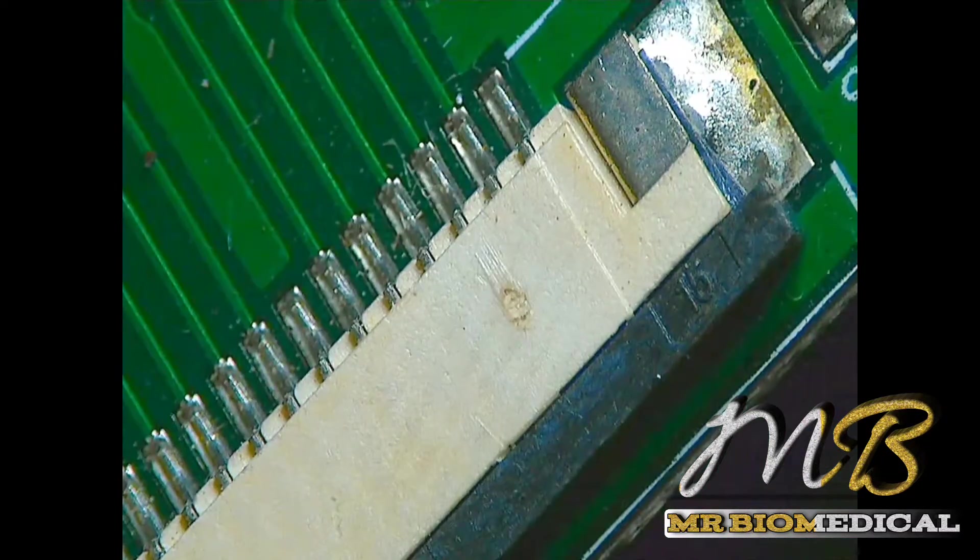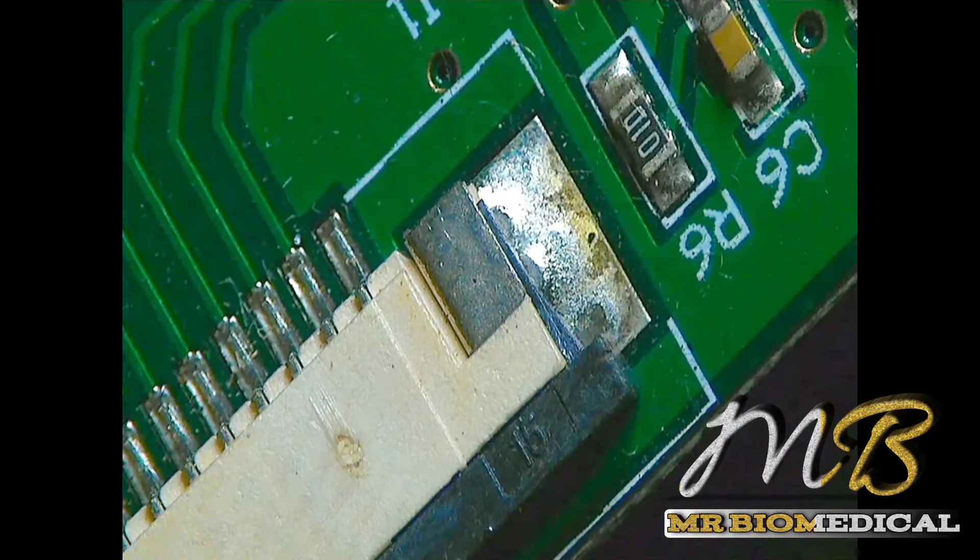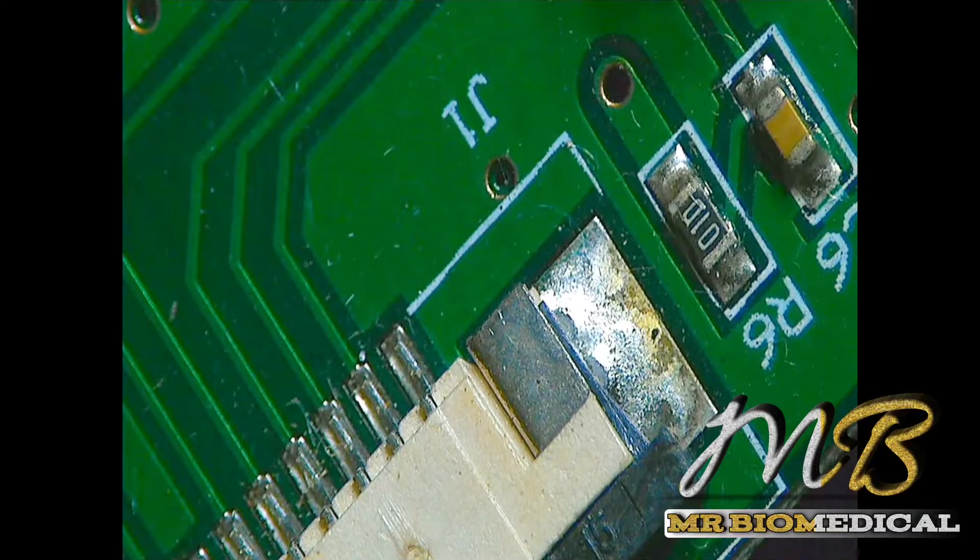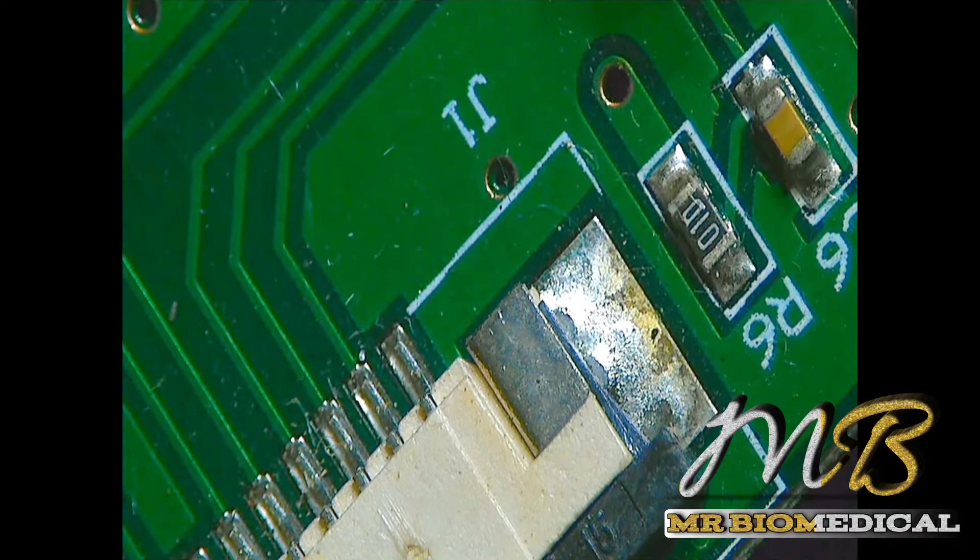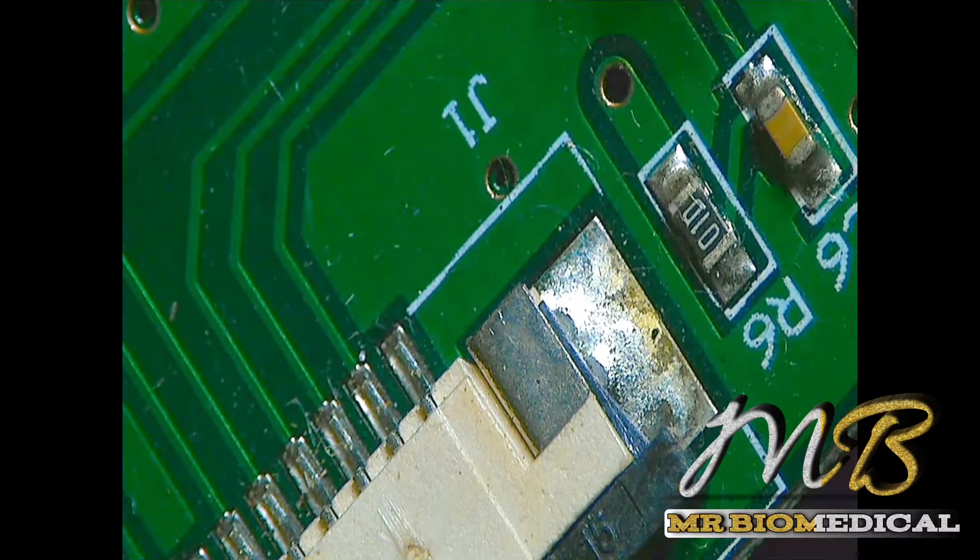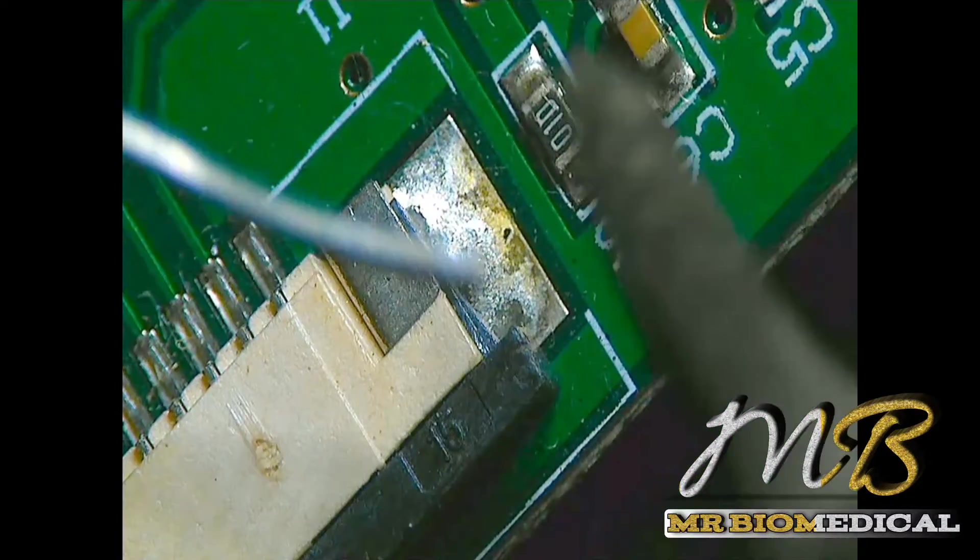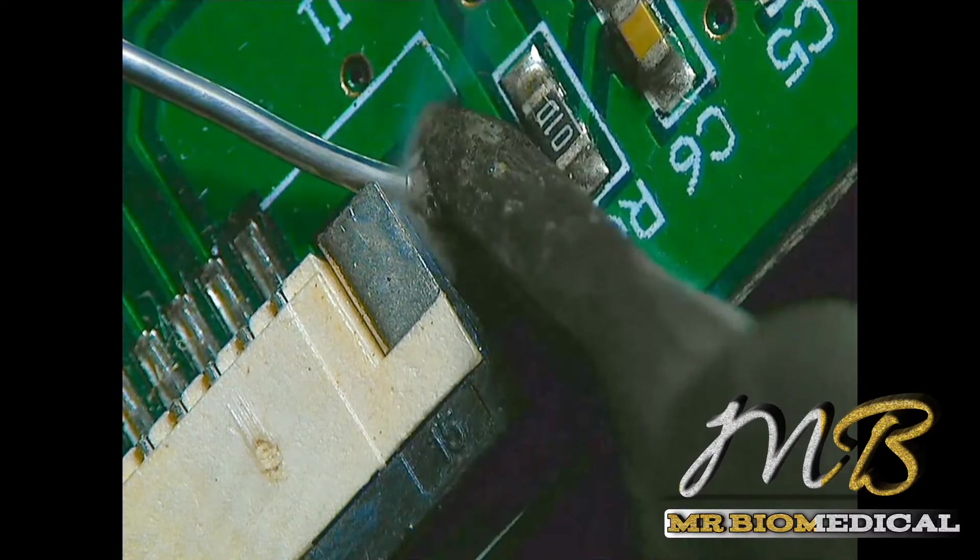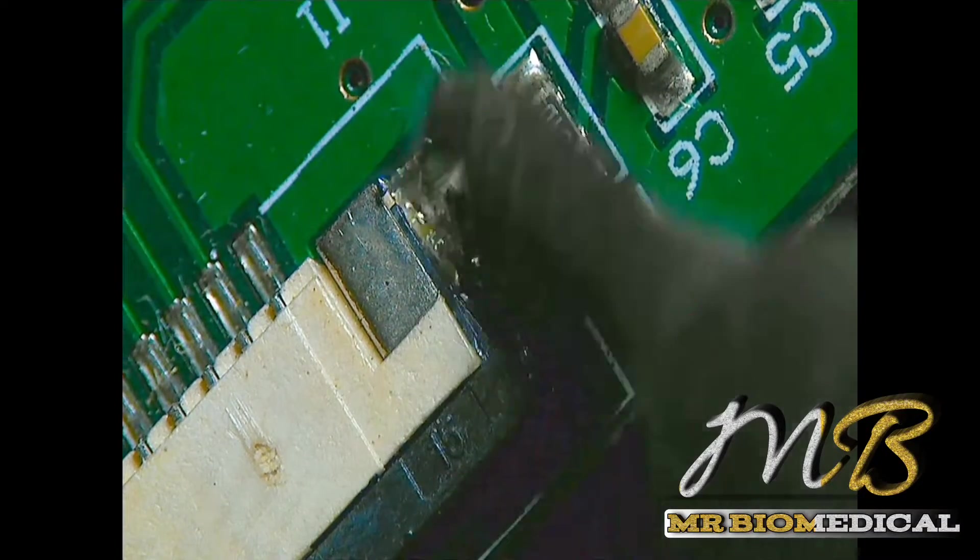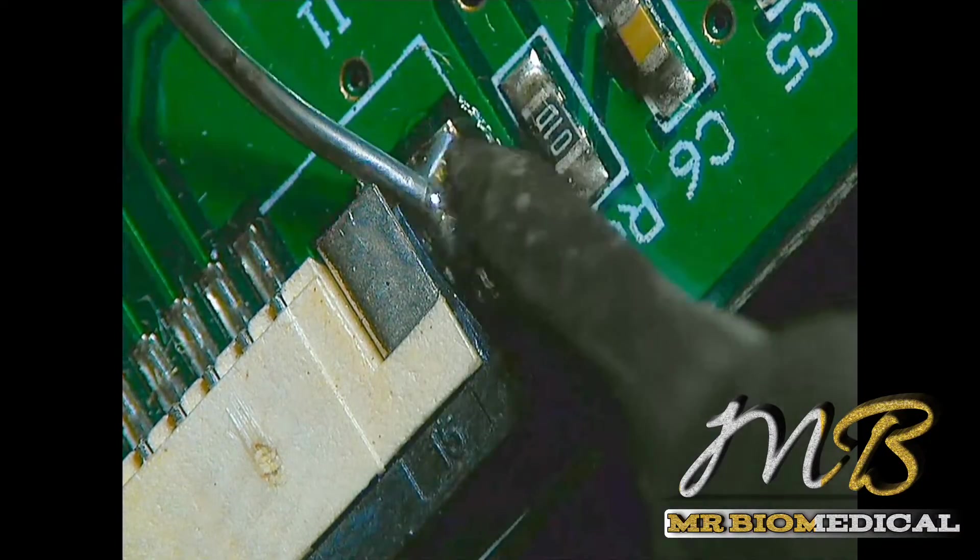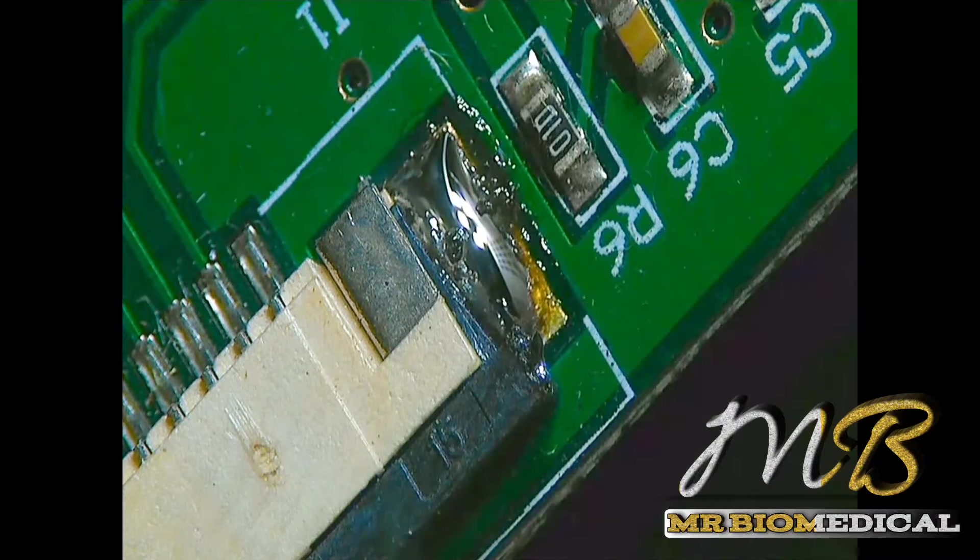So first things first, we have to prepare the FPC connector by adding the solder on each side like this. Why I am doing this? It will be easily melted down if you are heating from the back side.